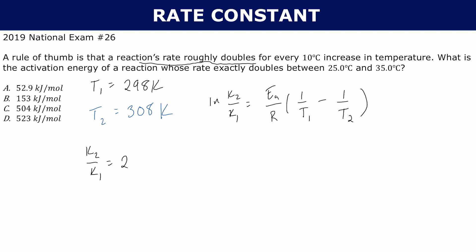That's because whatever value k1 is, k2 has to be double that since the reaction speed doubles with a 10 degree Celsius increase. So we can plug everything in.